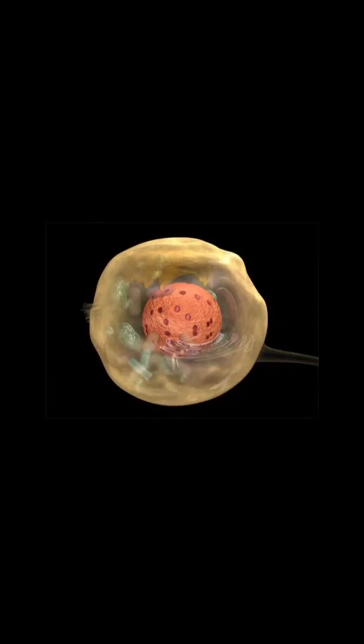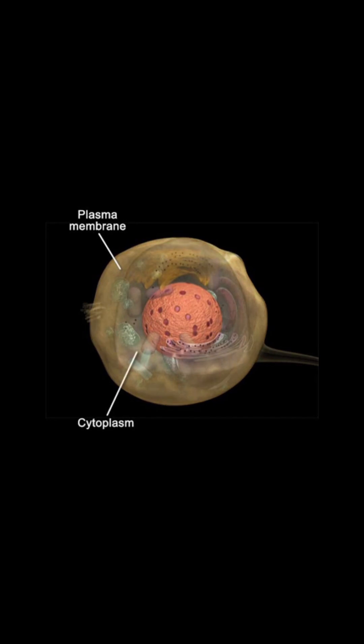There are three main parts of a cell: the plasma membrane, that surrounds the entire cell forming its outer boundary; the cytoplasm, which is the specialized living material of cells; and the nucleus, which is the control center of the cell.